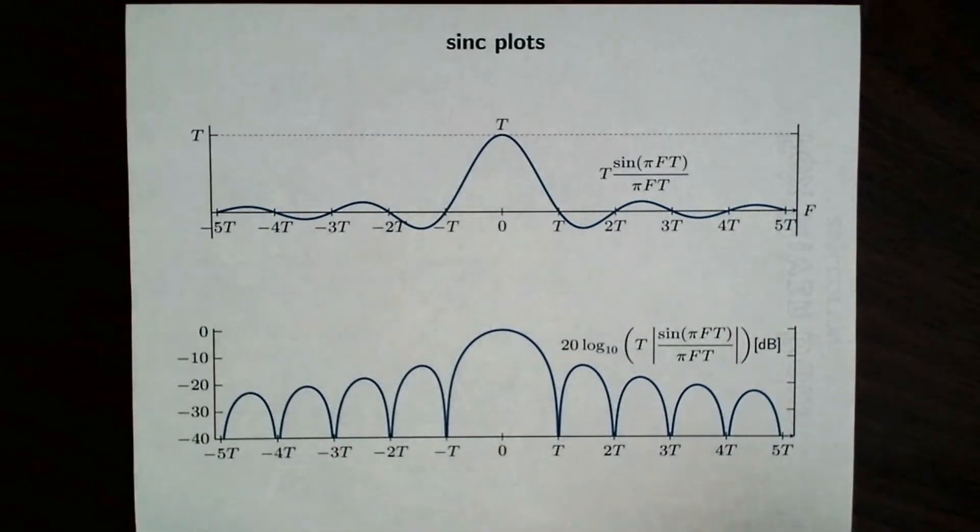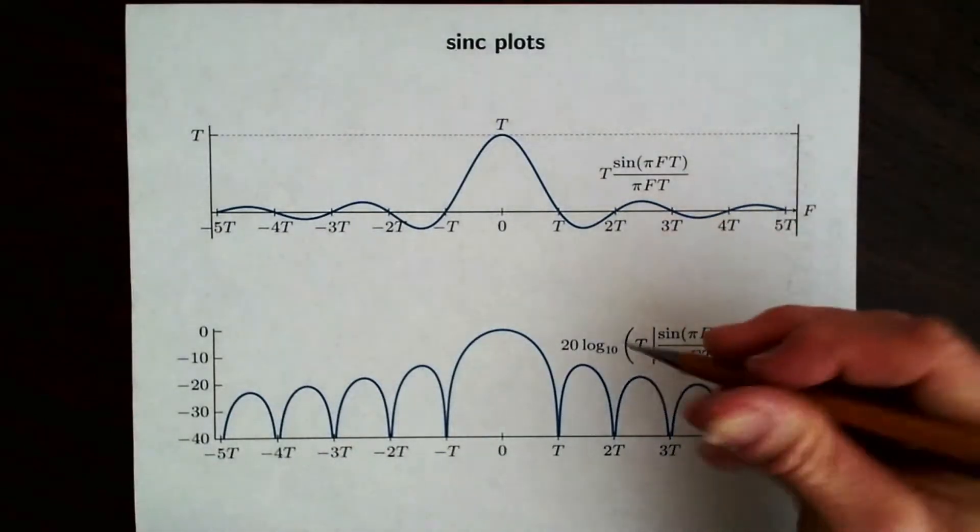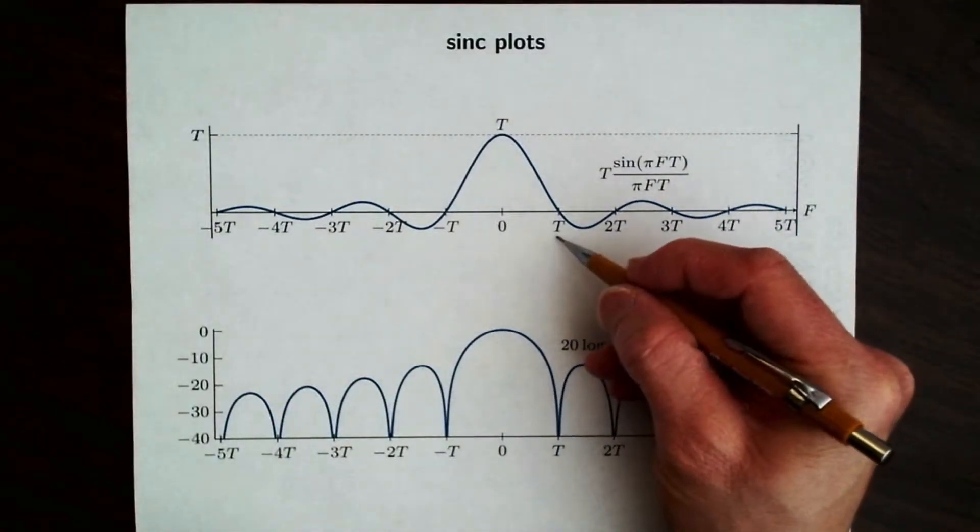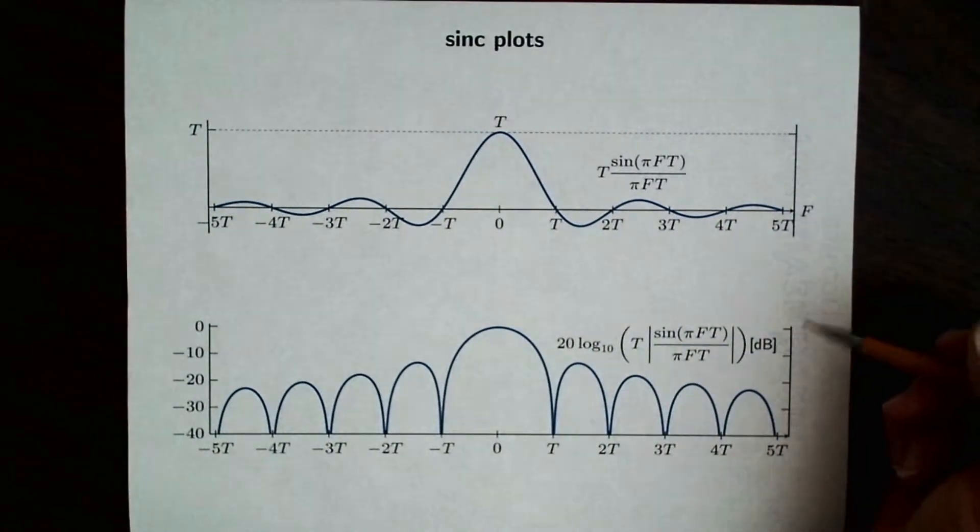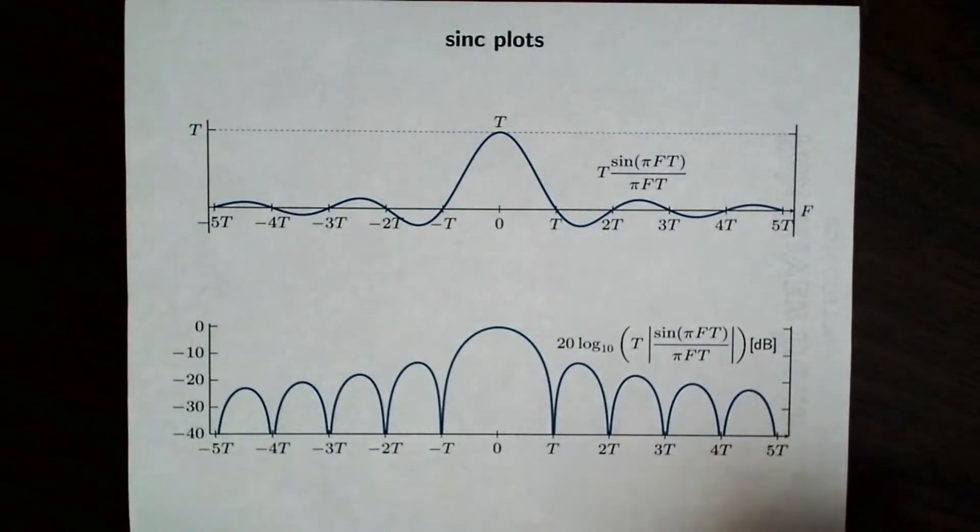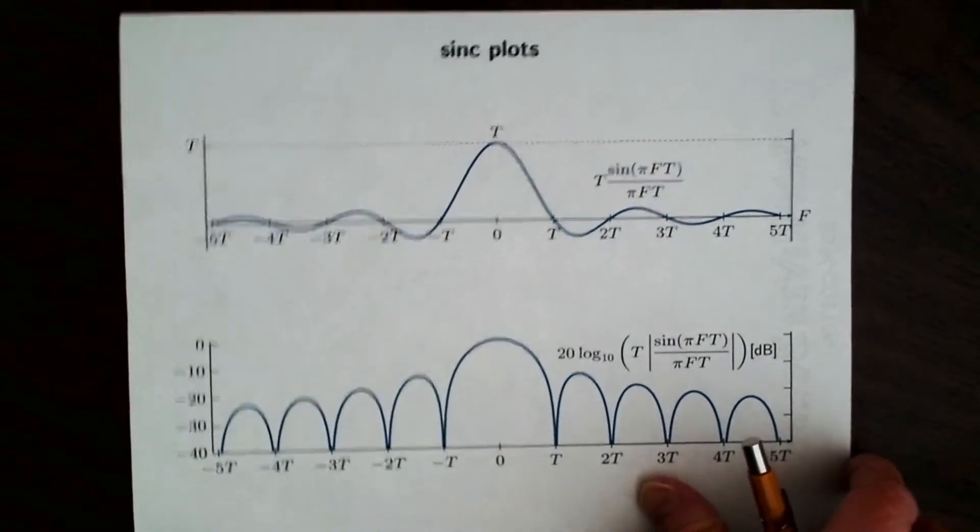Actually, this needs to be corrected. These should be at multiples of 1 over T. So we should have 1 over T, 2 over T, 3 over T, and so on. Same on the bottom.